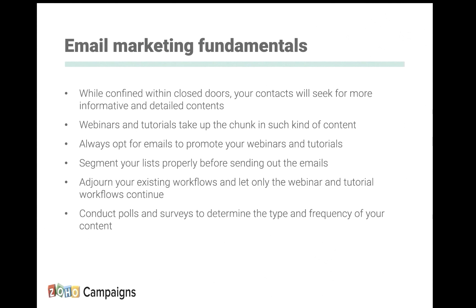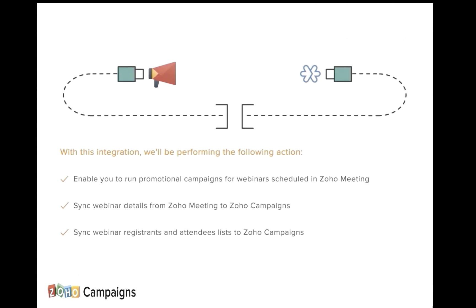Segmentation can be done according to demographics, geographical regions, designations, and so on. Make sure any workflow started before the crisis is stopped now, because people want content that is pertinent to the current situation — informative, crisp, and to the point. You can create new workflows and send campaigns at regular intervals. Conduct polls and surveys to determine the kind of content and frequency your audience prefers. Integration between Zoho Campaigns and Zoho Meetings allows you to fetch webinar details and attendee lists.